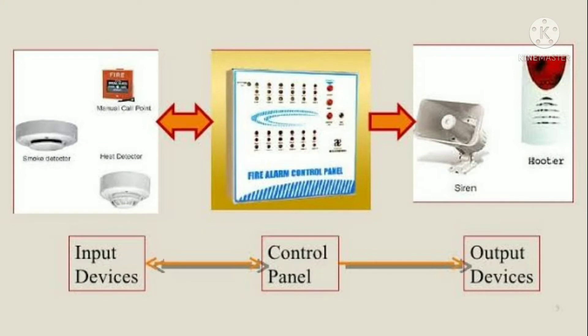How does the fire alarm system work? The fire alarm system will be explained in a simple block diagram. The first stage is input device, control panel, output device. In the input device, we have manual call point, smoke detector, and heat detector — we can use any of these. In this video, we are using one manual call point MCB. The next is the control panel: conventional type and addressable type. In this video, we will see the conventional type.